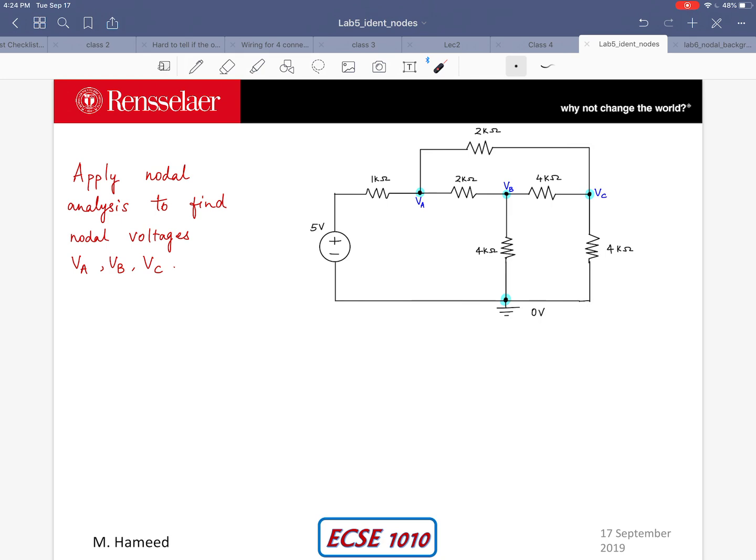I've highlighted the nodes and labeled them with their voltages VA, VB, VC. Let me also assign this particular node as 5 volts because it is going to be 5 volts with respect to ground. My goal in this video is to apply nodal analysis to find nodal voltages VA, VB and VC.